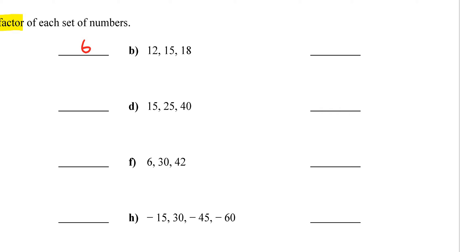For letter B, I have three numbers: 12, 15, and 18. I need to find the biggest number that divides all three at the same time. Starting with 1, then trying 2 — 2 doesn't work — but 3 does. 3 definitely goes into all three numbers evenly, and I can't think of a number bigger than 3 that divides all three, so 3 is my greatest common factor.